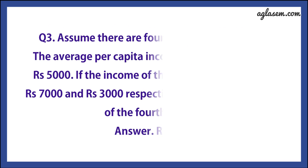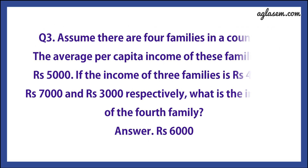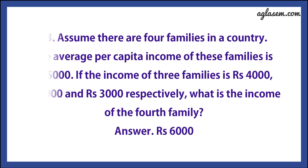The third question says: assume there are 4 families in a country. The average per capita income of these families is Rs. 5,000. And if the income of 3 families is Rs. 4,000, Rs. 7,000, and Rs. 3,000 respectively, what is the income of the fourth family? The answer is Rs. 6,000.